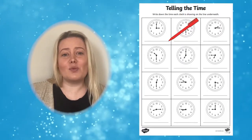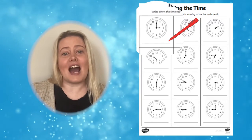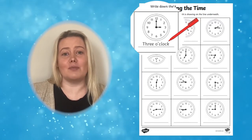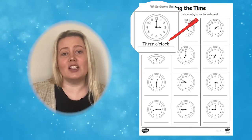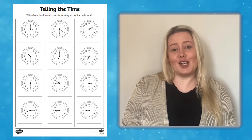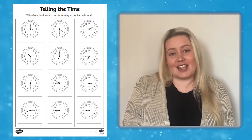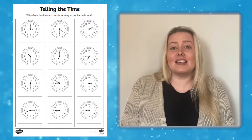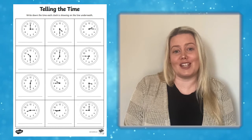The simplest way to use these activity sheets is simply to ask learners to look at the time shown on the clock carefully and write it on the line underneath. Before learners complete this activity sheet, you could assess their understanding by asking them to point to certain times on the worksheet.